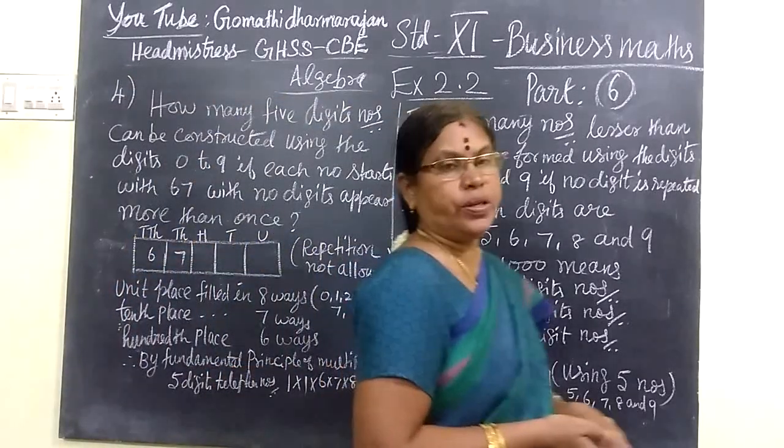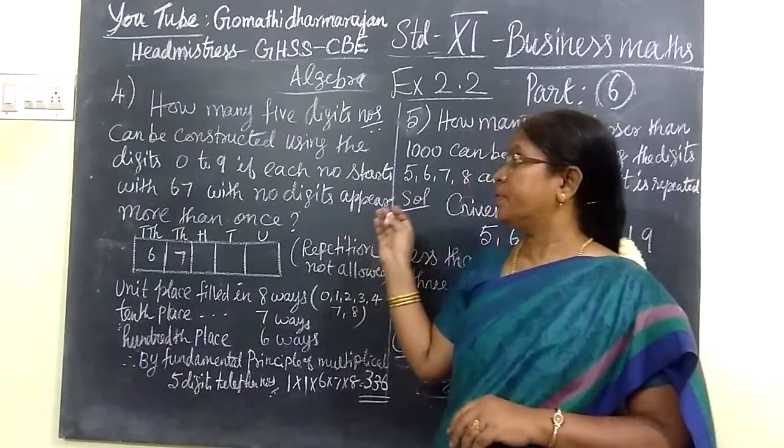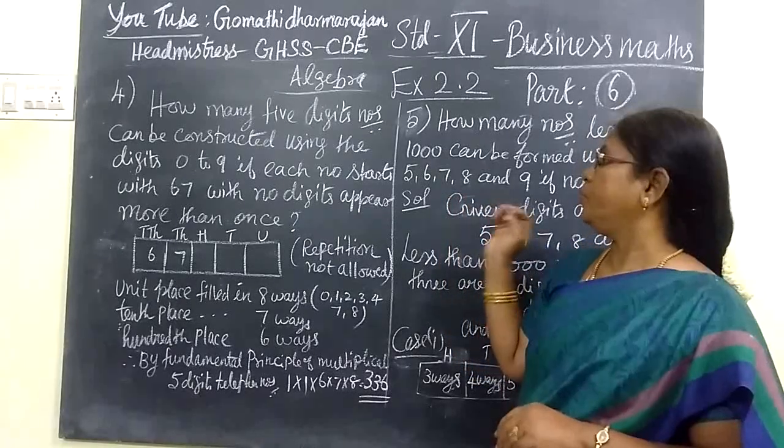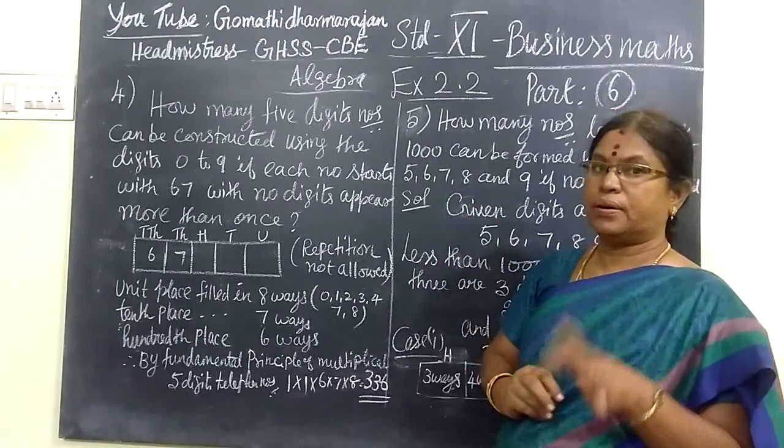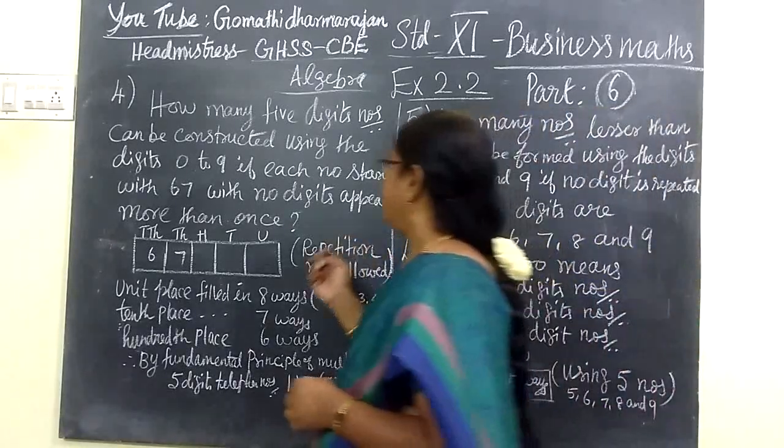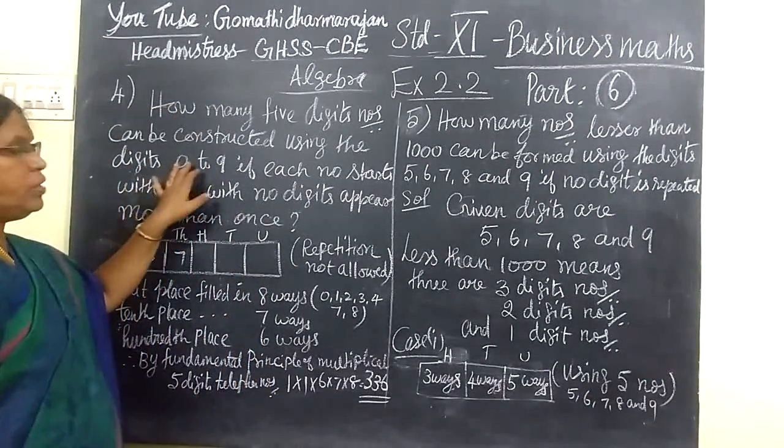Good evening. Now we see part 6, and this is for business math algebra, exercise 2.24. Last class we have seen problem 12. So, how many 5-digit numbers can be constructed using the digits 0 to 9?